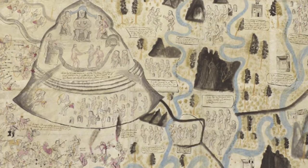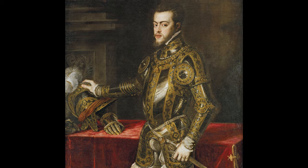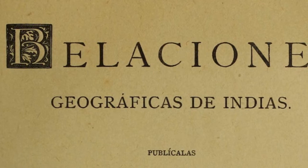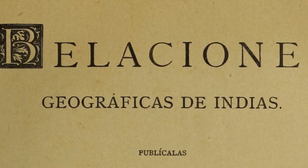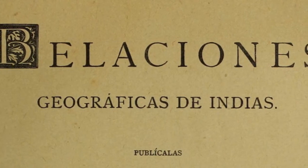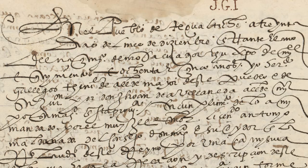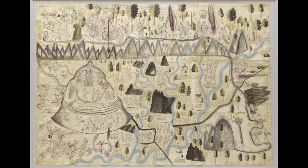The map of Tecualtiche was created in the year 1584 as a response to a questionnaire made by royal decree from King Philip II of Spain, who had requested information about the territories the Spaniards had conquered in the Americas, which was at that time referred to as New Spain. The responses to the questionnaire were called Relaciones Geográficas, because they were specifically intended to answer questions about the geography, resources, vegetation, languages, and people that inhabited the land. Each Relación Geográfica consisted of two documents: one with written responses to a set of 50 questions, and the other was a map.